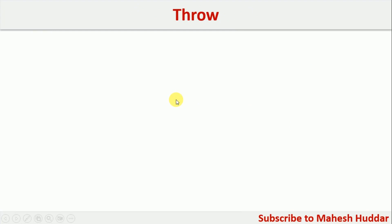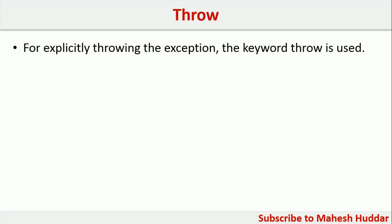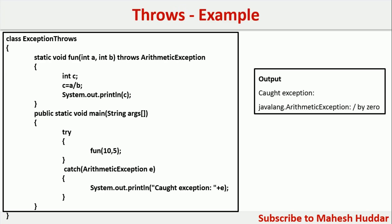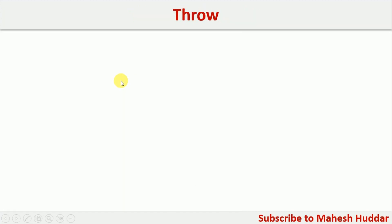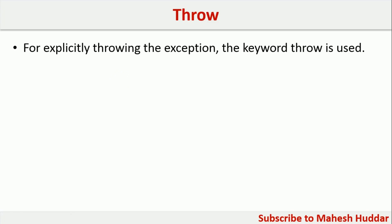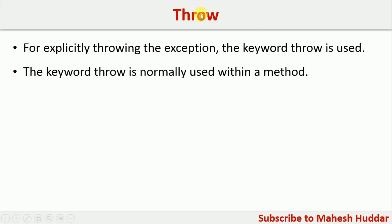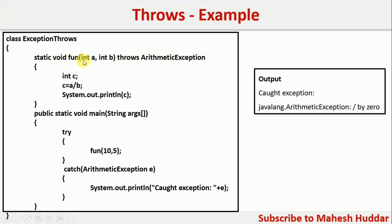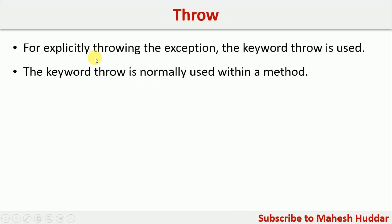Now there is one more very important keyword in Java used in exception handling. For example, if we want to throw an exception explicitly — in the previous case, if the value of b is equal to 0, a divided by 0 generates an ArithmeticException implicitly. But if you want to throw an exception explicitly, we don't want to wait for the system to throw it; we want to throw it ourselves. In such a case, we can use the throw keyword. The throw keyword is used within a method, not along with the method signature. In the previous case, we used throws while defining the method, but the throw keyword is used inside a method.